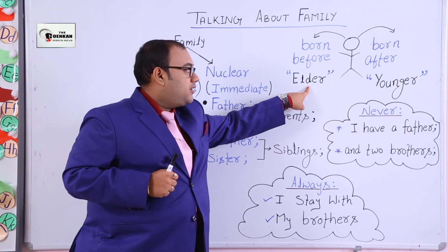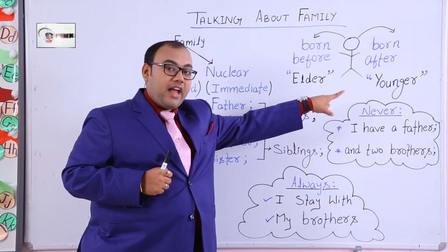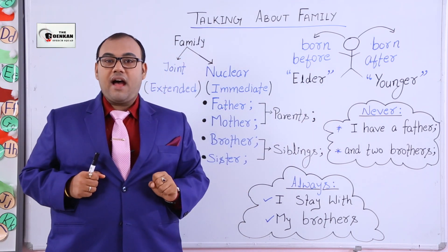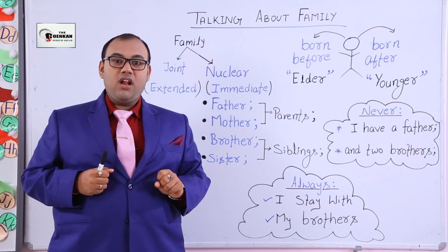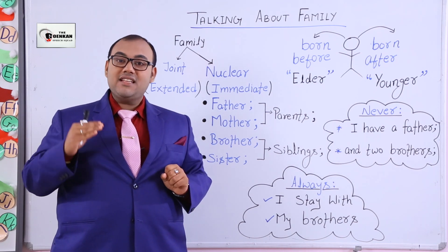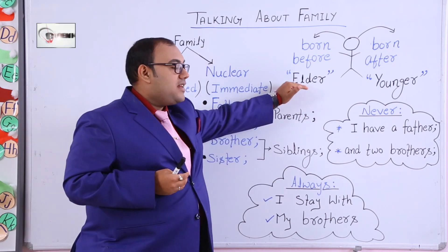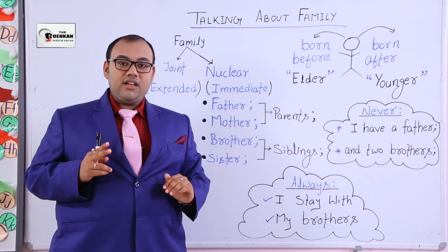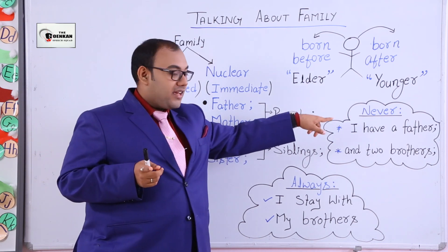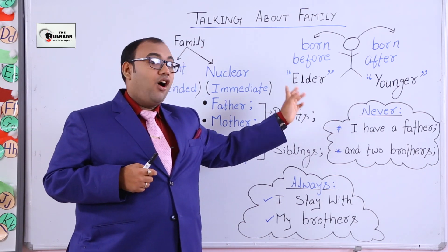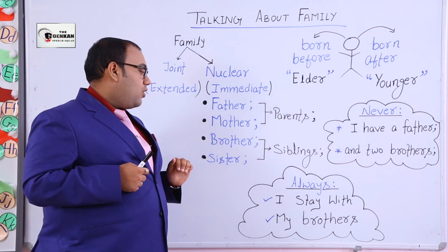So suppose you have two brothers elder to you — you will call the first one 'eldest brother' and the second one 'elder brother.' So what we learn is: eldest brother, elder brother, youngest brother, and younger brother or younger sister.